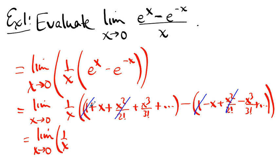Sorry, to be proper, one over x times two x plus two x cubed over three factorial plus two x to the fifth over five factorial and so on.